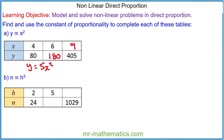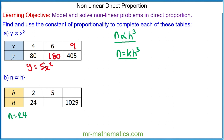For question B, we have n is directly proportional to h cubed. This tells us n and h are in direct proportion. We need to use k to describe the nature of this variation. We can find k by substituting in n is equal to 24 when h is equal to 2. So 24 is equal to k times 2 cubed, which is 8.